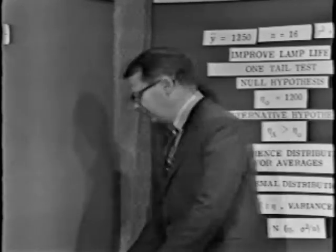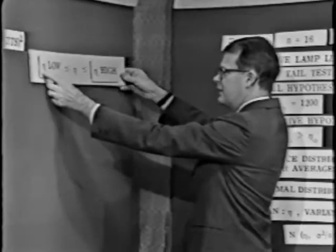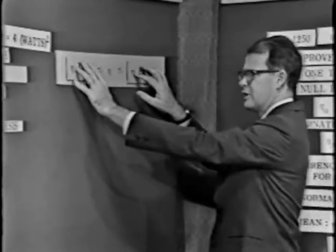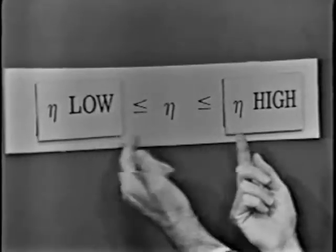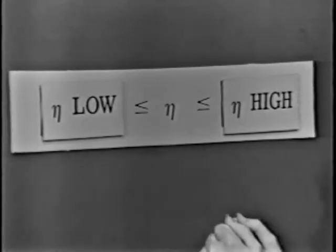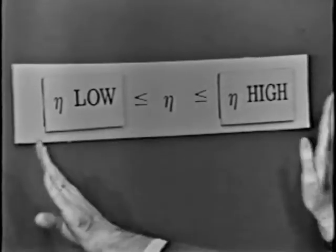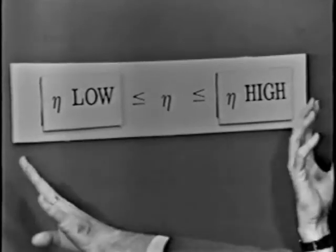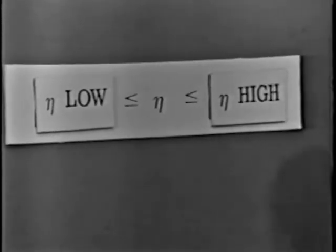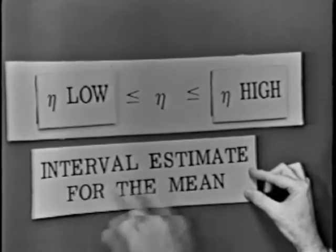What we're trying to do is establish two values for eta — a value on the low side and a value on the high side. All values of eta between these two limits would be believable in the light of the data, and all values outside these limits would be rejected or would strain our credulity to an extent we'd find it intolerable. What we're really trying to do is establish an interval estimate for the mean.